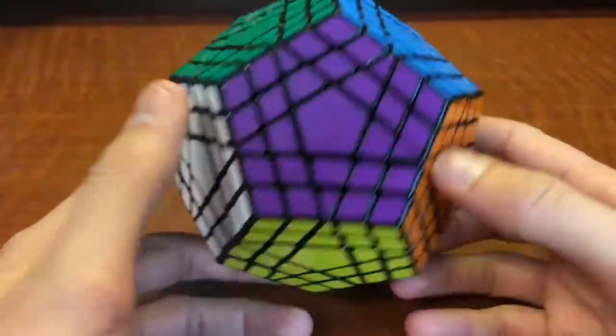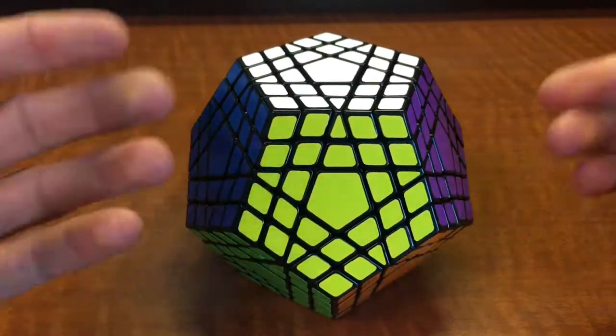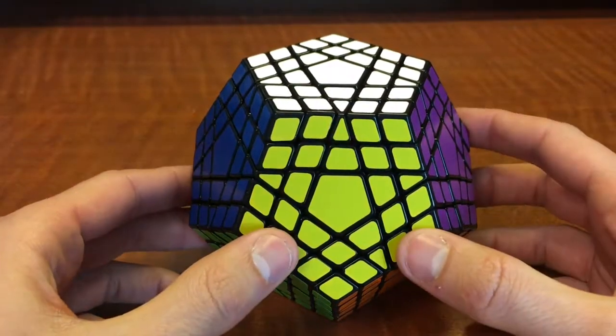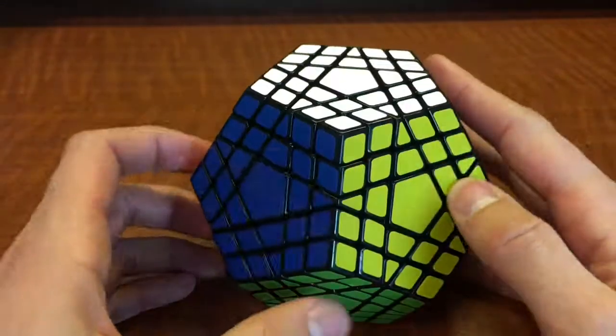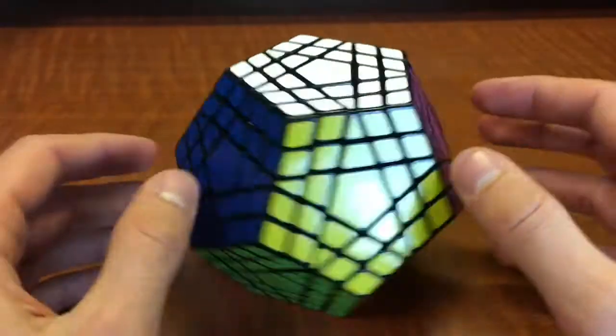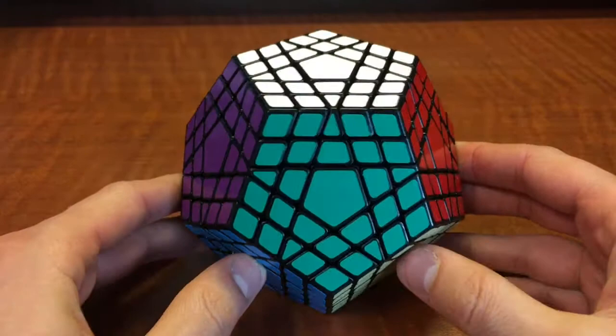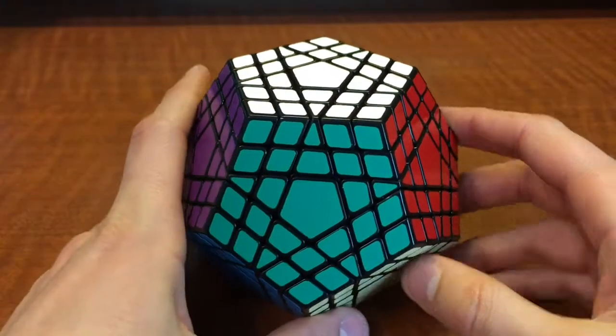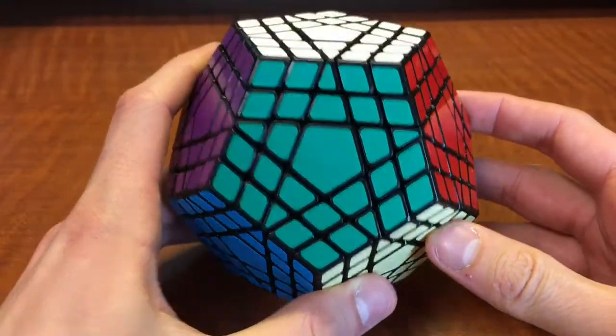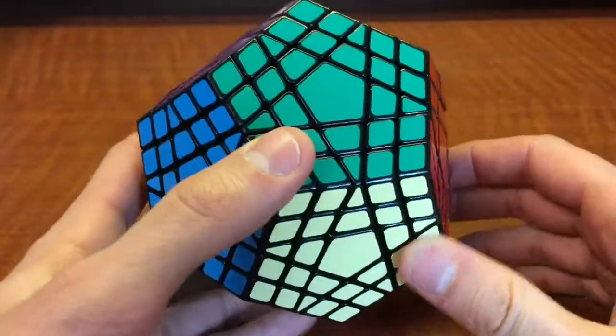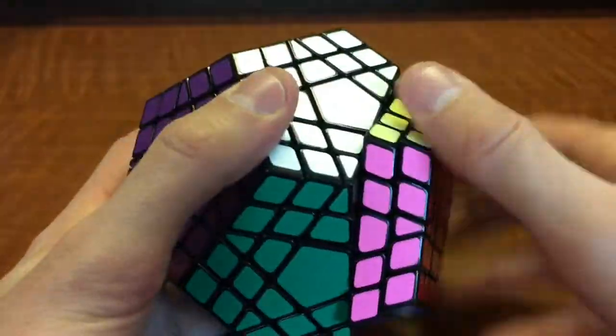But yeah, there's not really much else to say about this puzzle that I can think of. It's what you would expect from a Shang Shao puzzle. Smooth turning, good quality plastic and stickers that hold up pretty well. That's really all that there is to it. But the only thing left that we can do is, of course, scramble the puzzle, which I'm sure you all want to see. So I will go ahead and scramble it.